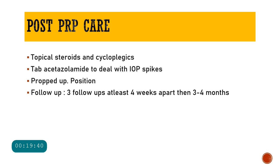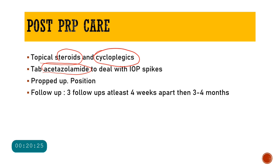After PRP — performed under topical anesthesia at the slit lamp — patients receive topical steroids for laser-induced inflammation, topical cycloplegics for pain relief, and tablet acetazolamide for potential intraocular pressure spikes. Patients are advised to sleep in a propped-up position. Three follow-up visits are scheduled approximately four weeks apart, followed by three-to-four monthly reviews.